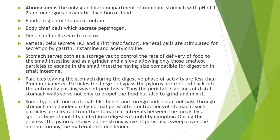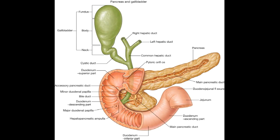In this way, ingesta is transferred from the stomach into the small intestine, specifically the duodenum. In the duodenum, both pancreatic juice and bile are secreted through the major pancreato-hepatic duct, and their secretion is stimulated by the action of secretin hormone.